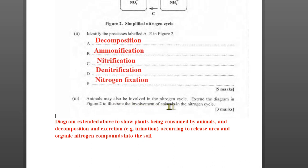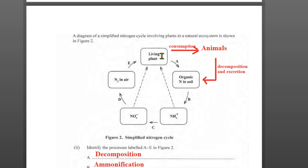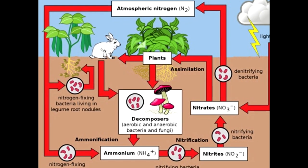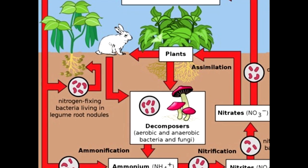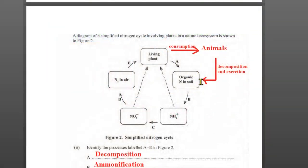Animals may also be involved in the nitrogen cycle. Plants are consumed by animals, and those animals would either excrete nitrogen through urine or die and decompose, releasing urea and organic nitrogen compounds into the soil. Nitrogen compounds get assimilated into their cells, and they either excrete nitrogenous waste back into the soil or die and putrefy, returning nitrogen to the soil.